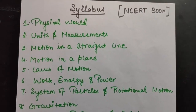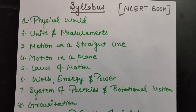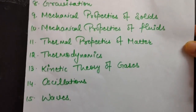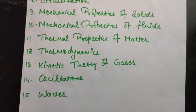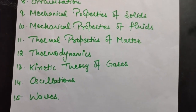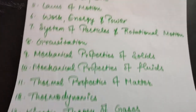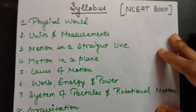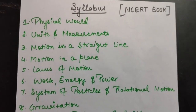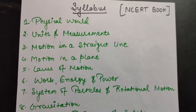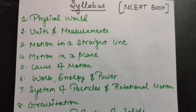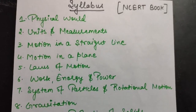This is your syllabus for the first term. We will be covering 8 chapters in the first term and another 7 chapters for the second term, so total we have 15 chapters. The book that you have to prefer is your NCRT book. Questions we will be doing from the NCRT book, and on a regular basis I will be solving various derivations and numericals in videos.